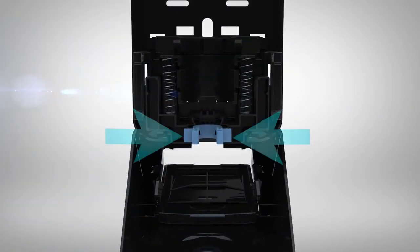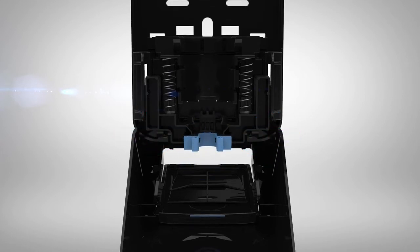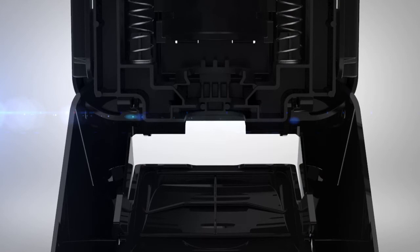Remove the portion control selector by squeezing the sides together. Reinsert the selector upside down and push until it clicks into place. If the selector is not in the dispenser, the unit will dispense the minimum portion size.